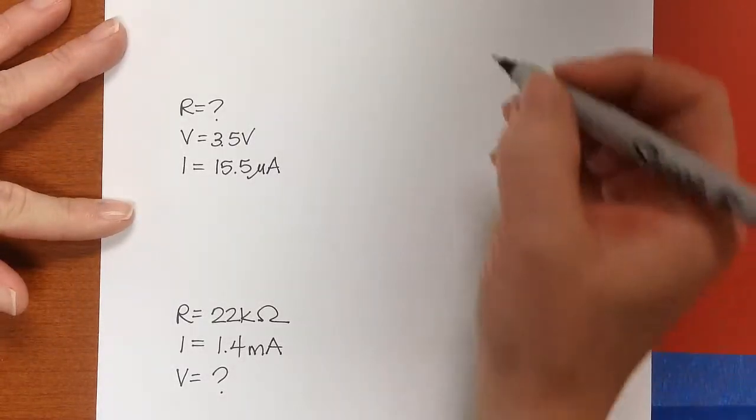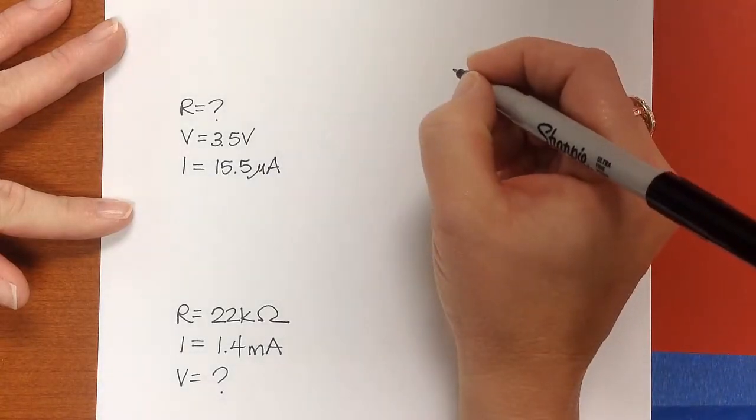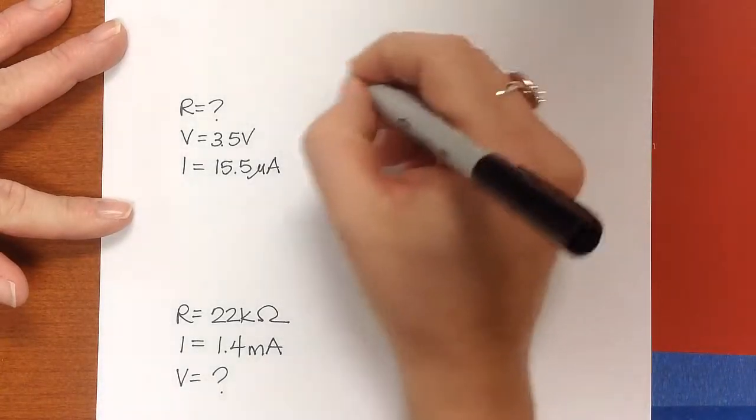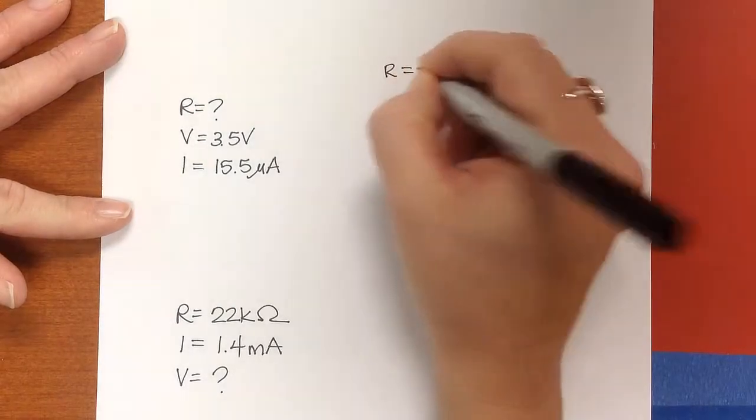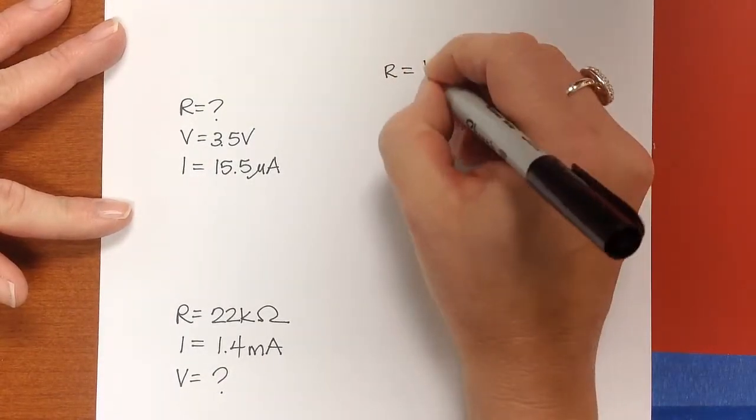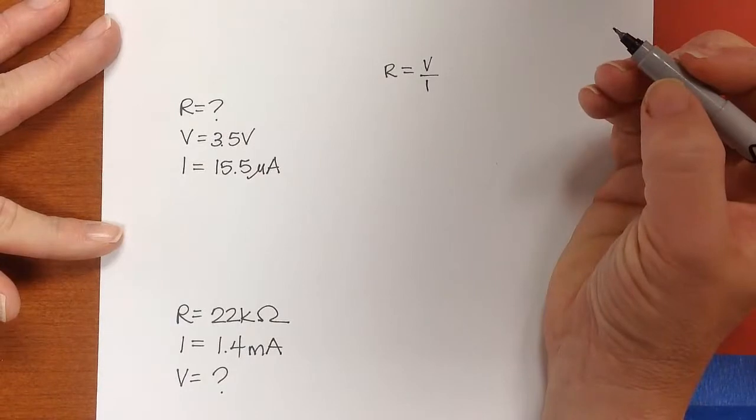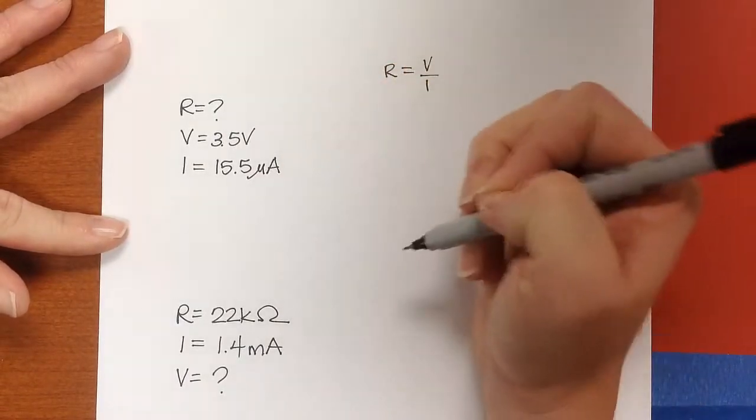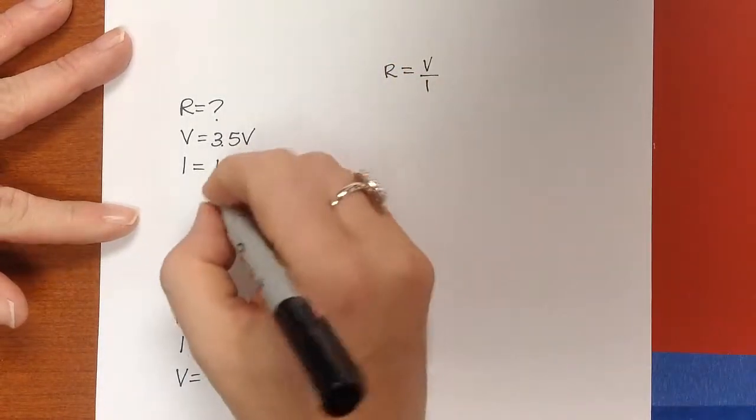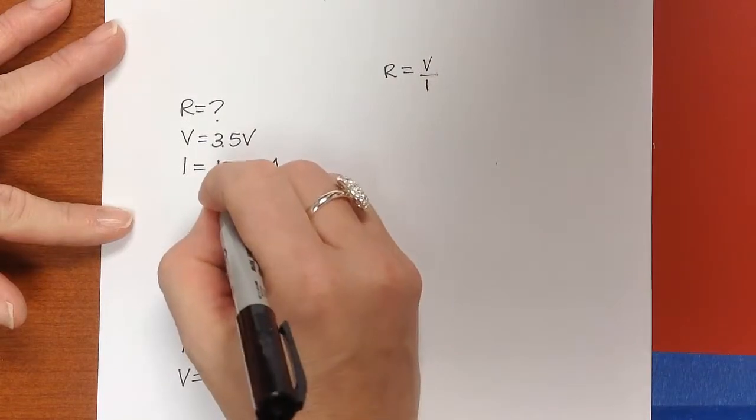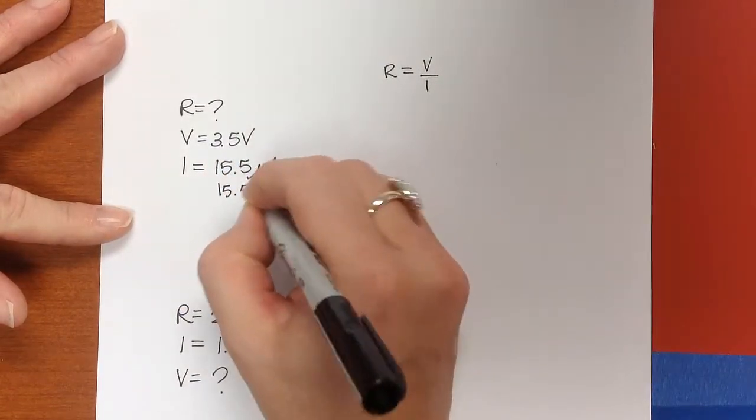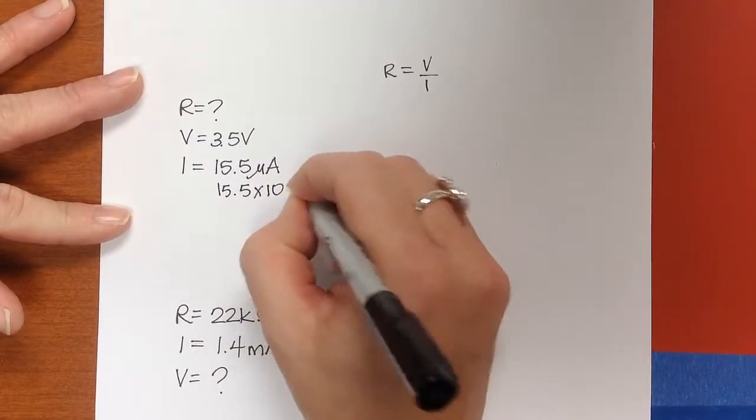So if we want to solve for R, R is going to be V over I in Ohm's Law. And the problem is we have this current in microamps, remember that that is 15.5 times 10 to the negative 6th Amps.